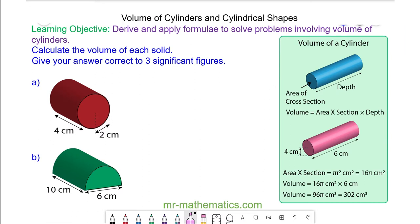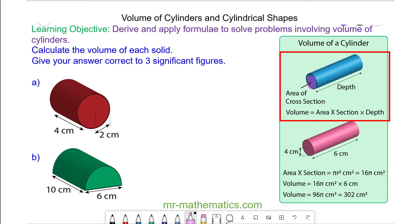Hello and welcome to our lesson on finding the volume of cylinders and cylindrical shapes. The volume of a cylinder is the area of the cross section, which is the circle face, multiplied by the depth.